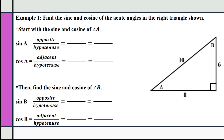Let's start with the sine and cosine of angle A. Remember, sine is opposite over hypotenuse. For angle A, the opposite side is 6 and the hypotenuse is 10 — the hypotenuse is always opposite the right angle — so that reduces to 3/5. The cosine of angle A is adjacent over hypotenuse: the adjacent side is 8 and the hypotenuse is 10, which reduces to 4/5.